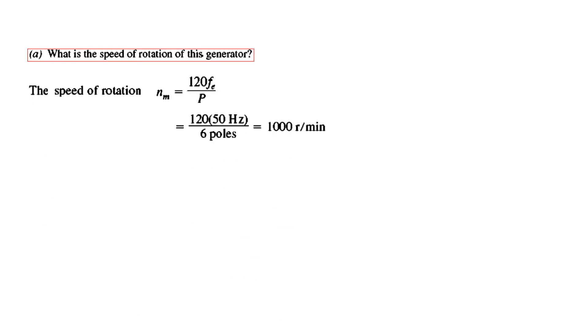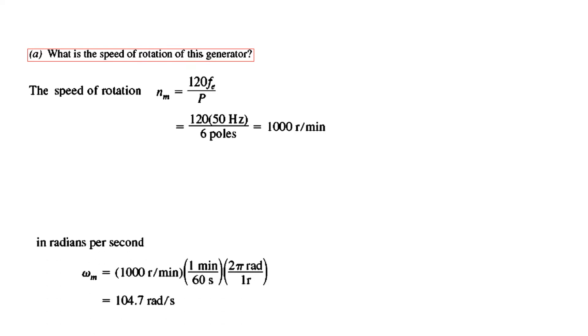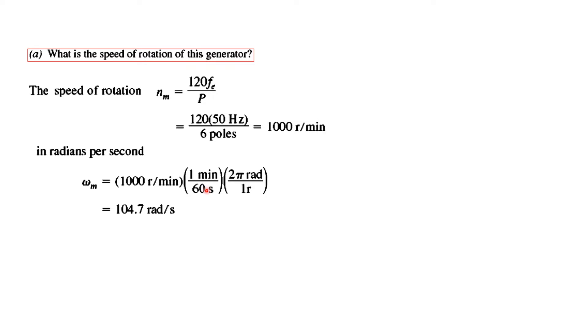Part A: What is the speed of rotation of the generator? Using Nm = 120f / P, with frequency = 50 Hz and poles = 6, the speed is 1000 RPM. We also calculate speed in radians per second by dividing by 60 and multiplying by 2π, giving 104.7 rad/s.